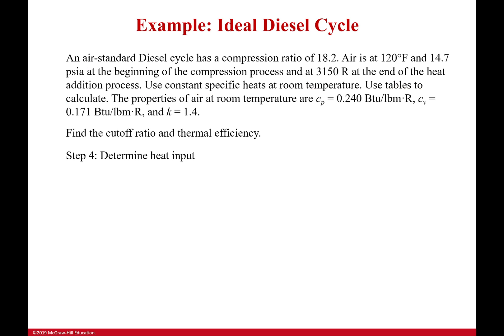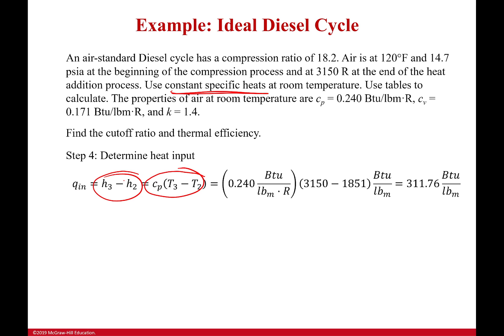How do we do that? Well, it said constant specific heat. So when we're trying to figure out the difference in our enthalpies, we just have to do our specific heat at constant pressure, because it is constant pressure line. That's what we see right there. And we have our difference in temperatures. Plug it in. We always have absolute, always absolute right here. And we get 311.76 BTUs per pound mass.